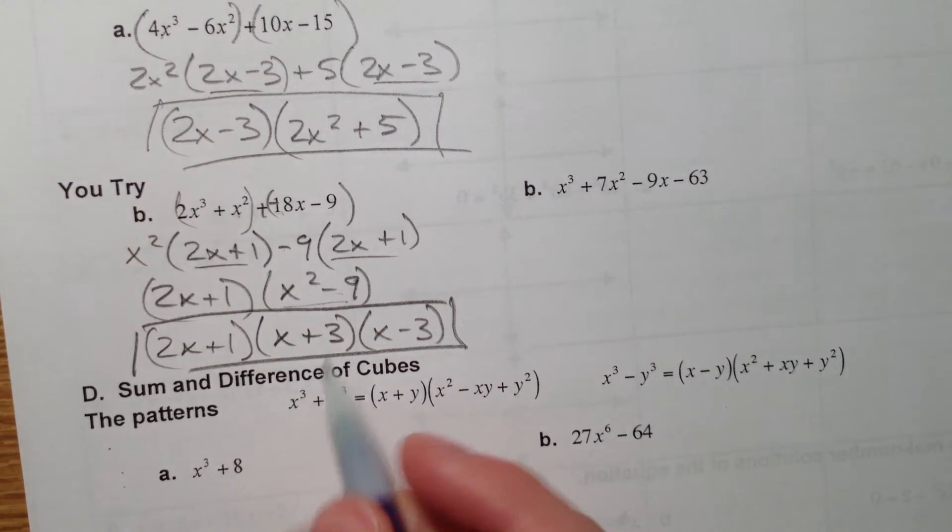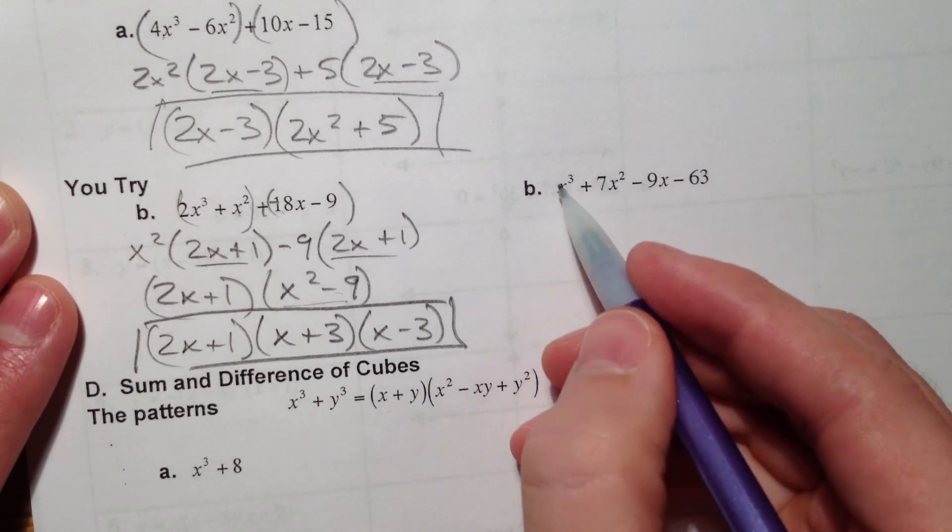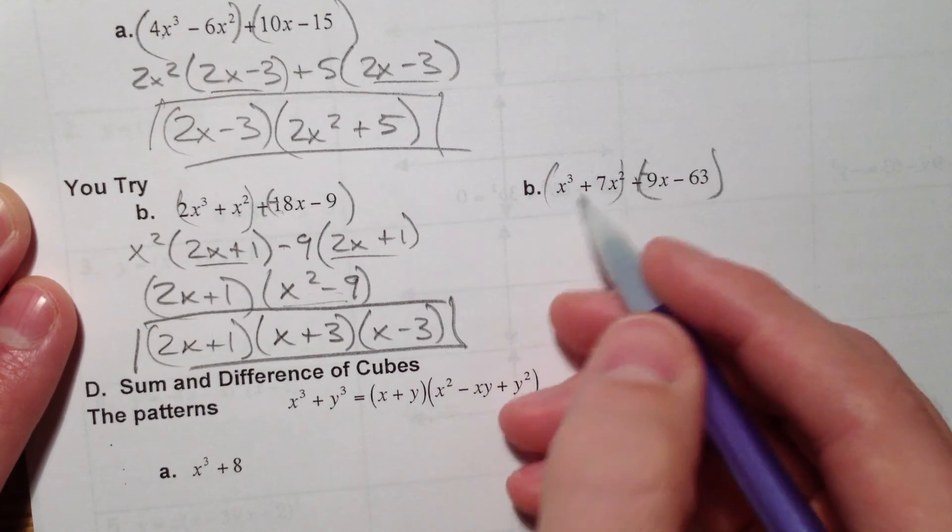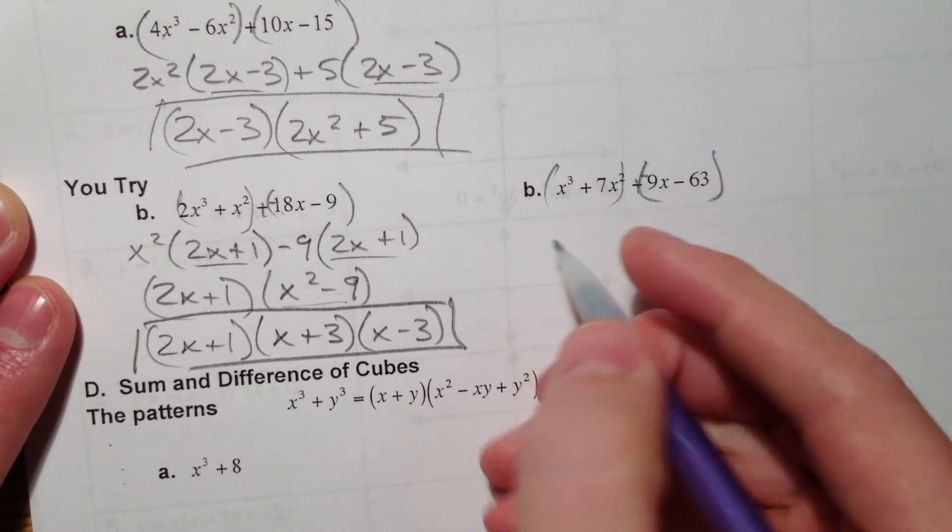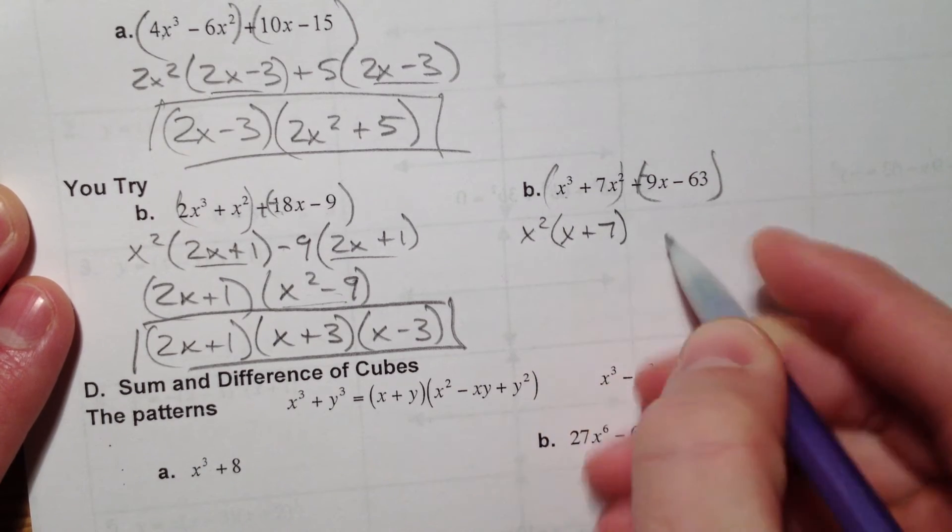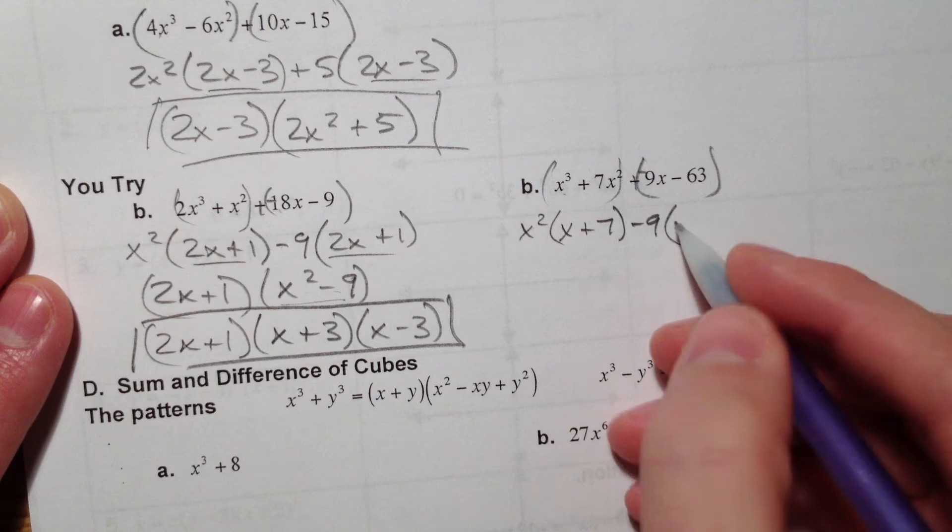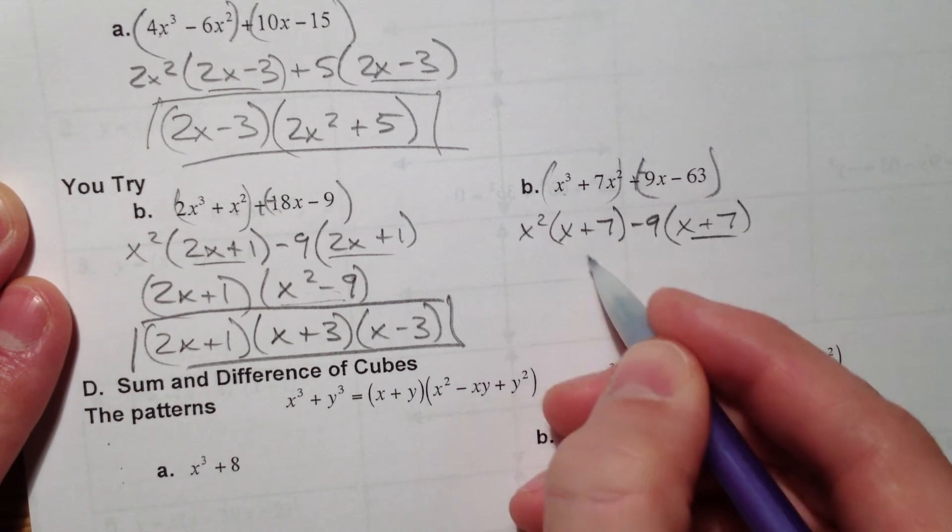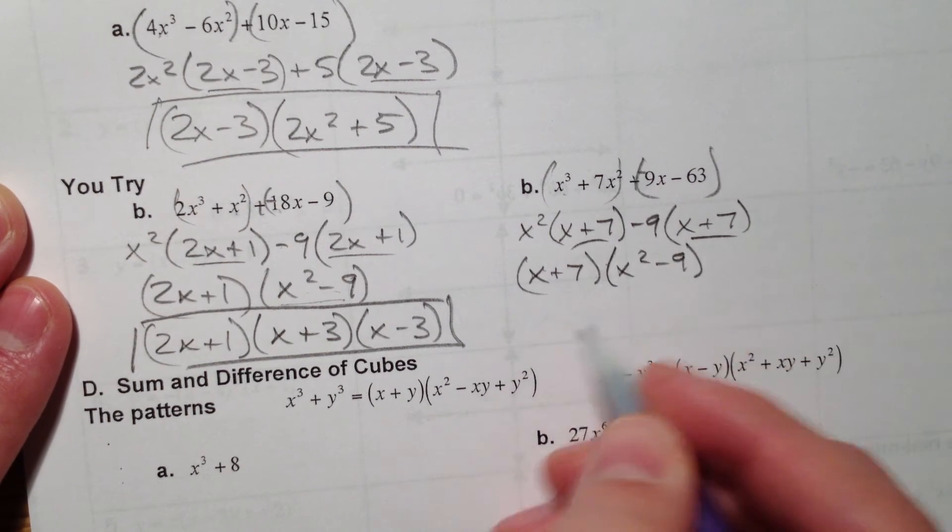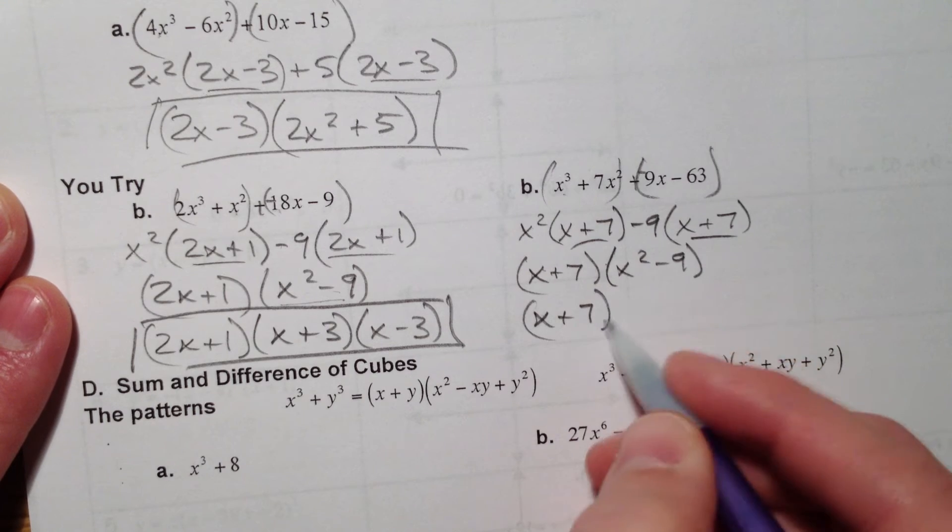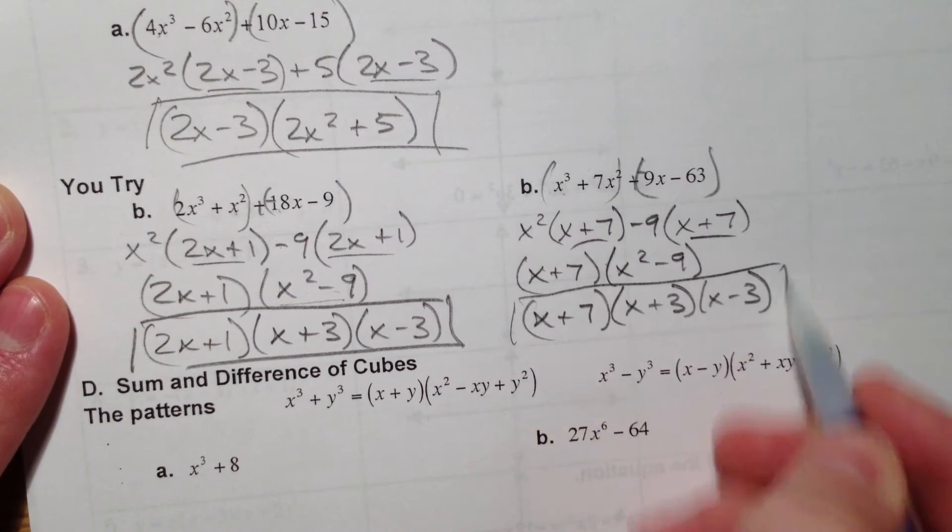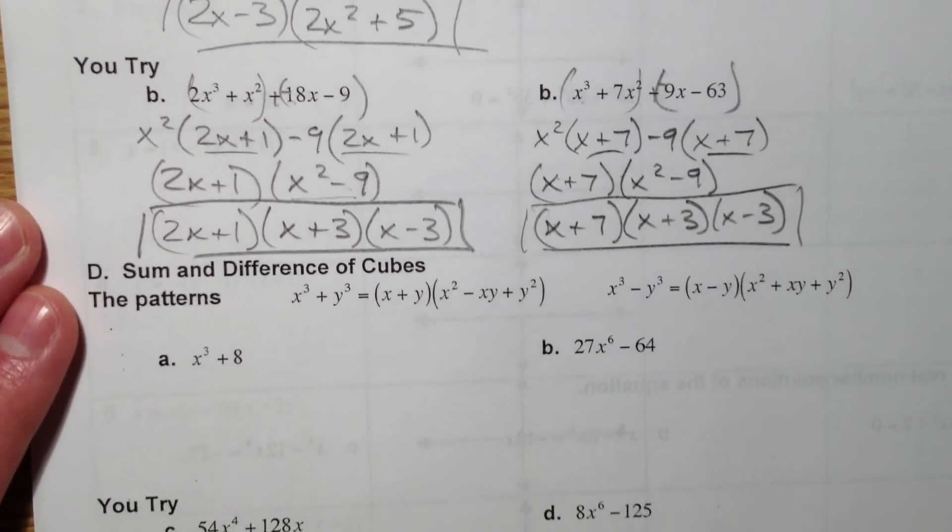Same thing goes on this next one. Four terms. Factor by grouping. Anytime you have four terms. Sometimes it's helpful to rearrange just to see if you can pull something out. x + 7. Pull out a negative 9, x + 7. So they've got that x + 7 in common. So this one's very similar to the last one. Don't leave the x² - 9 alone. x + 3, x - 3.